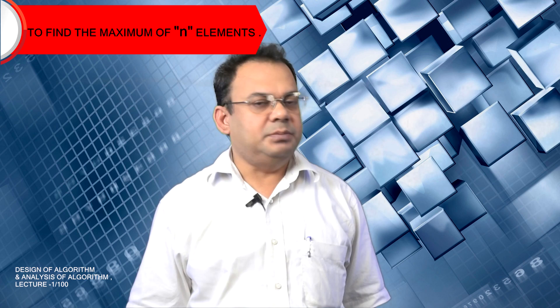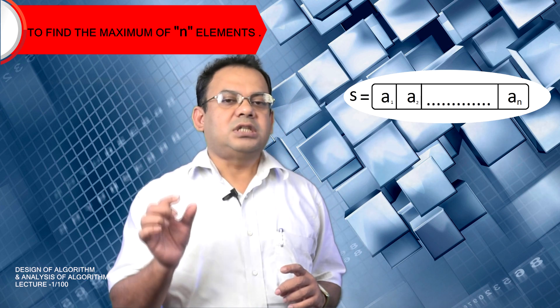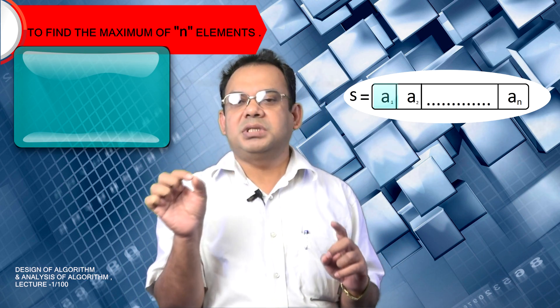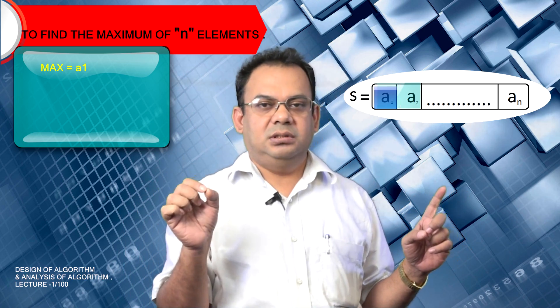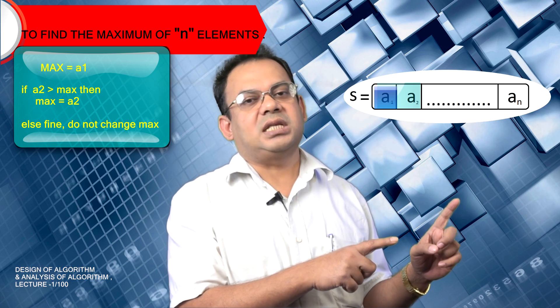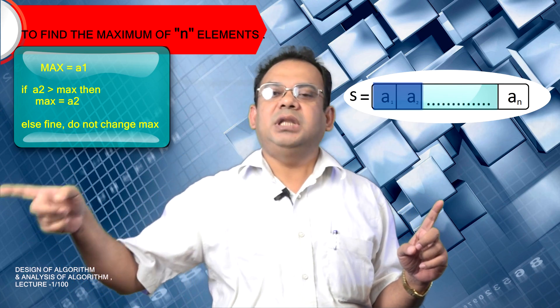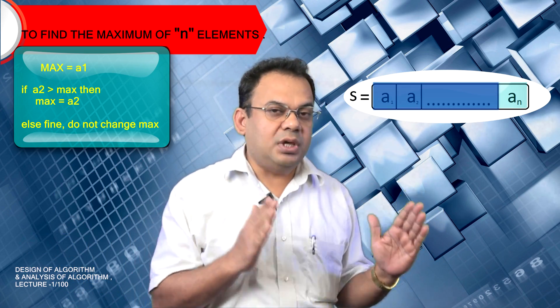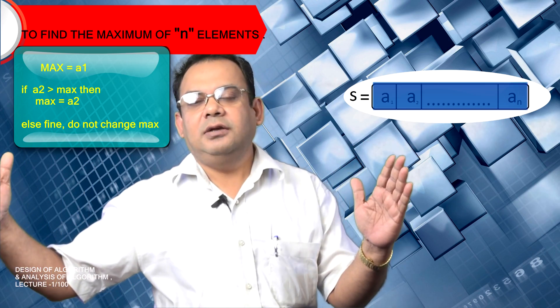For example, if we are given a problem to find the maximum of n elements, we pick up the first element and initially consider that element as maximum. Then we take the second element and compare it with the previously set maximum. We proceed until we examine every element. Every time, we are getting partial solutions, and those partial solutions are combined until we get the final solution.